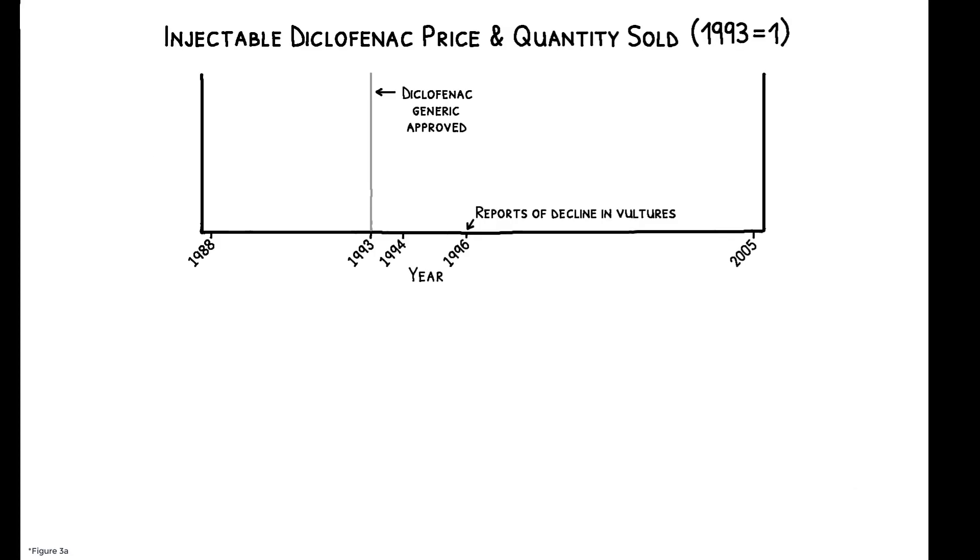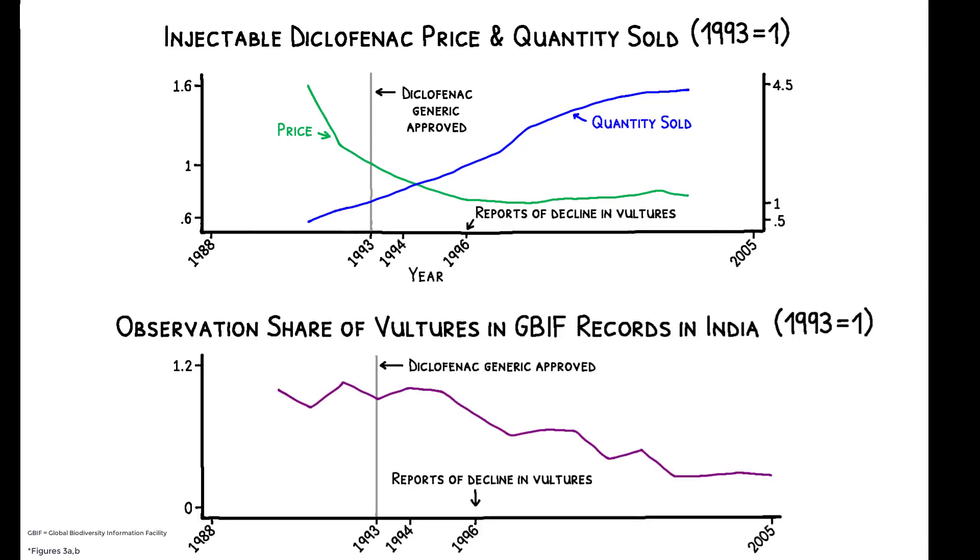This figure compares national trends in the price and quantity sold of diclofenac with data on reported observations of vulture species over the same period. A trend break follows the advent of veterinary use of diclofenac in 1994.